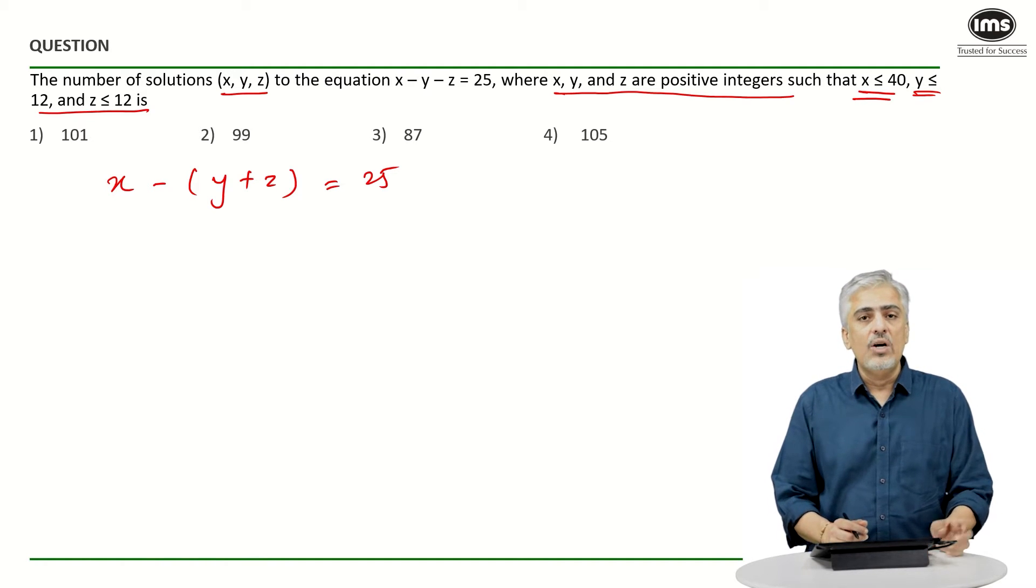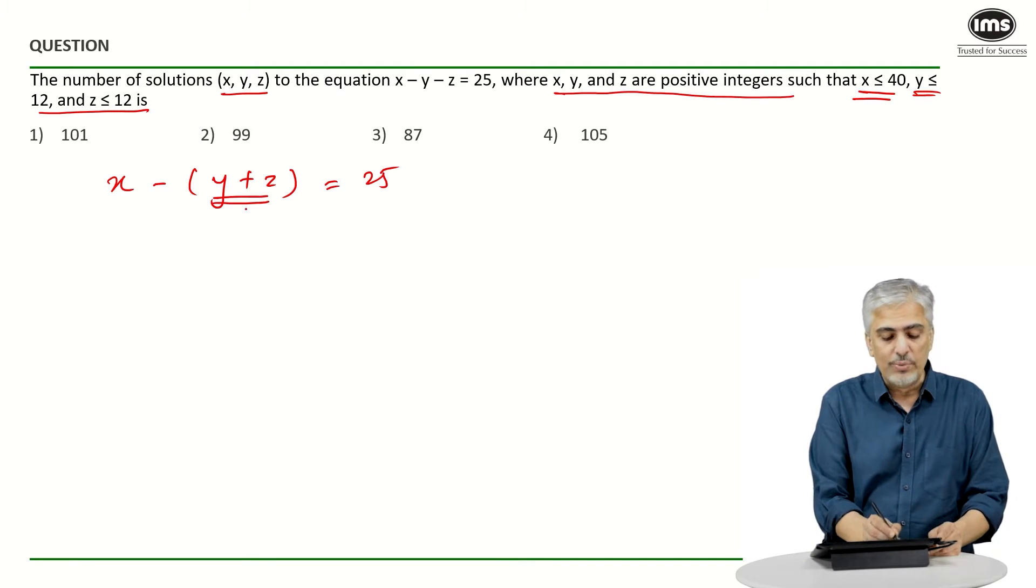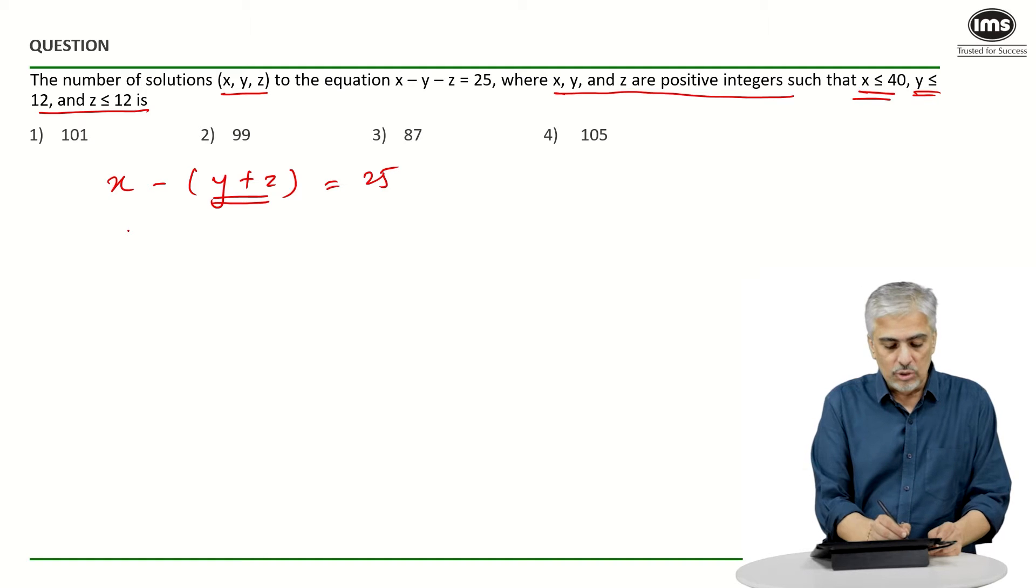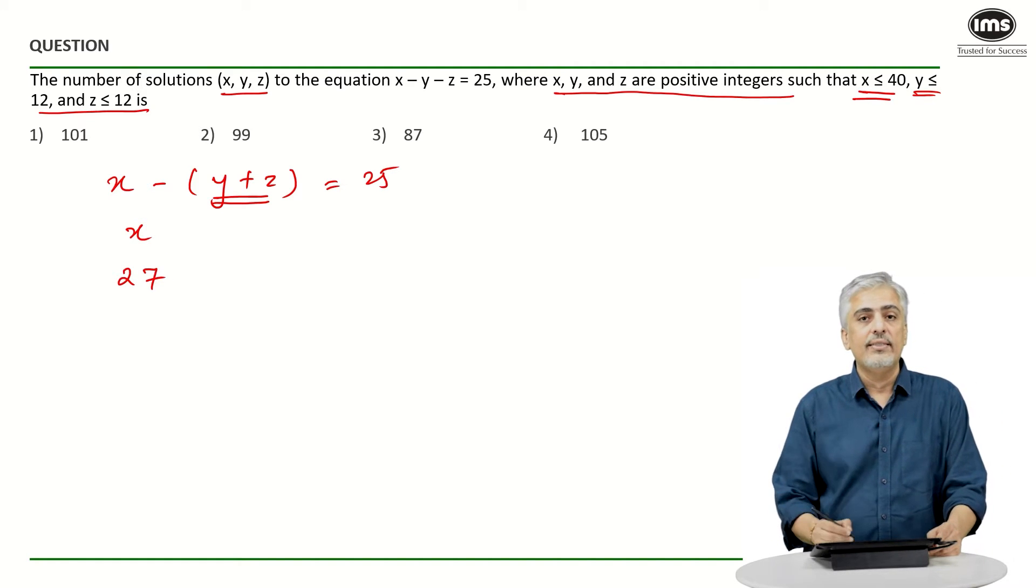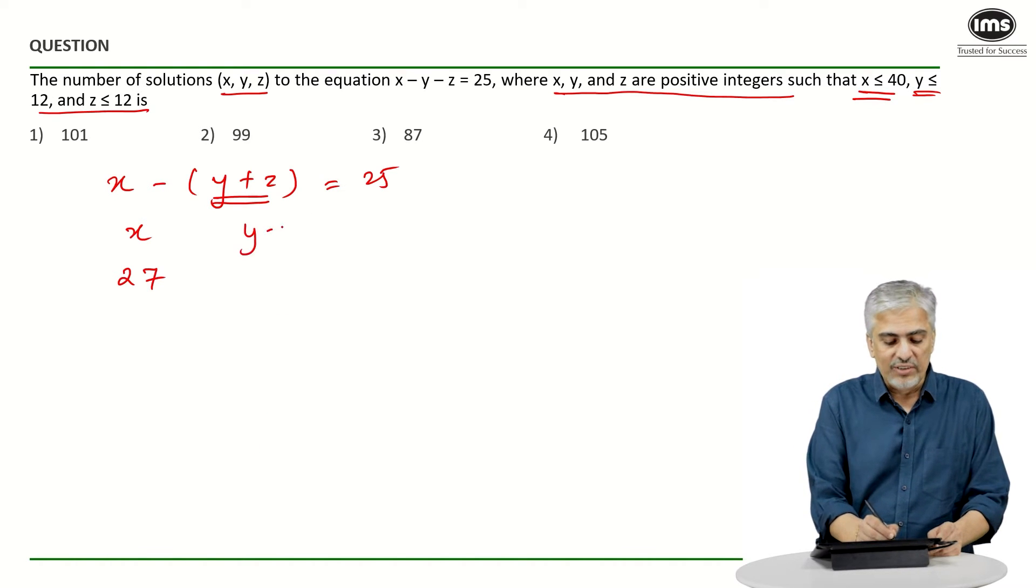Now let's start thinking: what is the minimum value we need to take for y and z? They both have to be positive, which means y and z minimum have to be 1. Now if they both have to be minimum 1, this bracket has to be 2 (y plus z), which means the minimum value I need for x has to be 27. So if I start with x, the minimum value I need for x is 27.